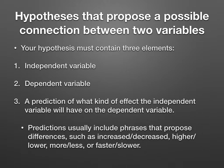Hypotheses that propose a possible connection between two variables — and the other type too — must contain three elements: the independent variable, the dependent variable, and a prediction of what kind of effect the independent variable will have on the dependent variable. This also applies to hypotheses where you compare groups. That's why I say those two types of hypotheses are really the same — the only difference is you have to generate a null and an alternative hypothesis and test it statistically. Predictions include phrases like increase or decrease, higher or lower, more or less, or faster or slower.